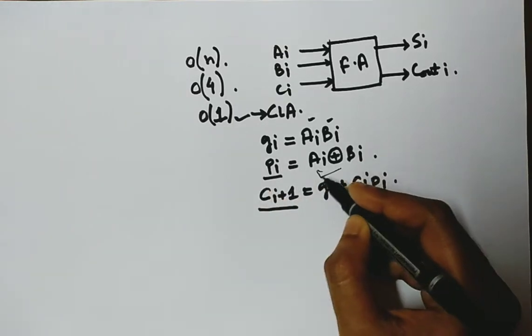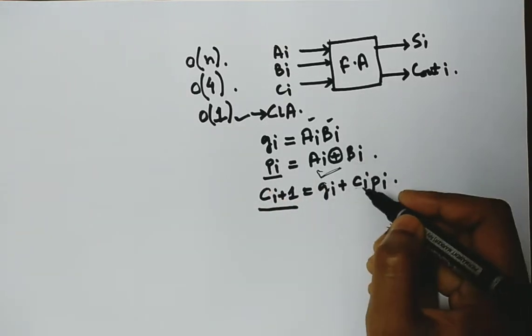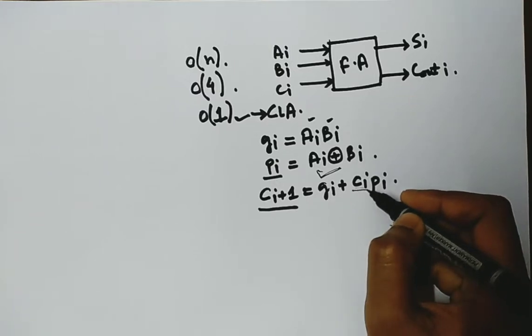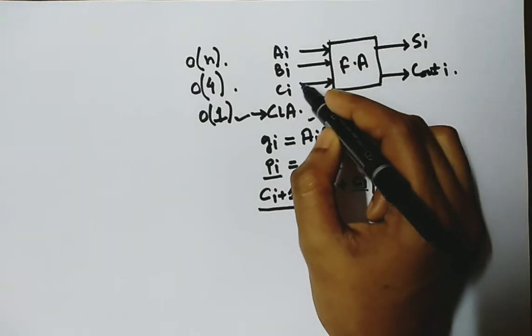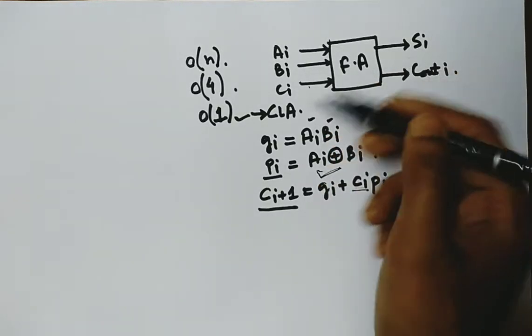Either carry is generated, or if carry is already there as input carry to the ith stage, then that carry is propagated.